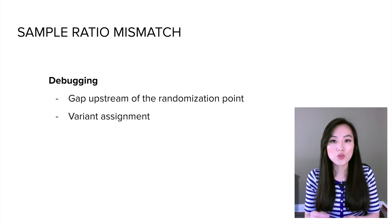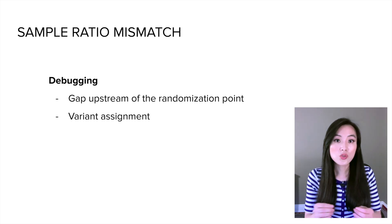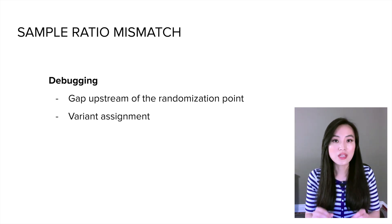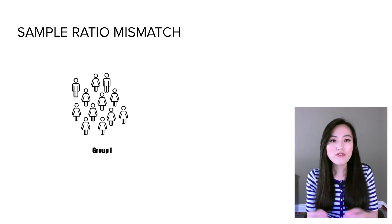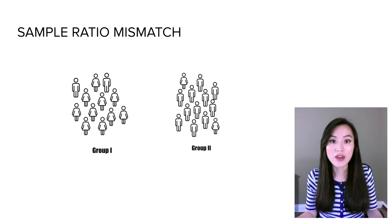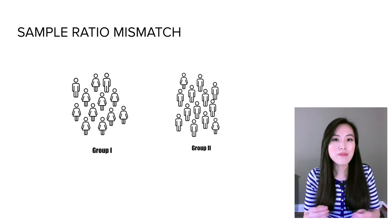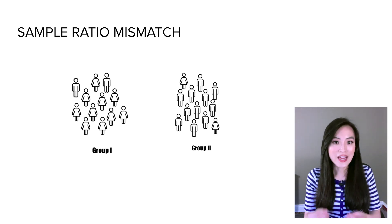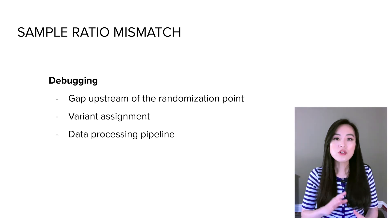Another thing to check is whether the variant assignment is done correctly — are users allocated to different variants properly? If we use user ID to assign users, is the assignment truly random? Will any bias be introduced in this step? For example, if we find one group consists mainly of females and the other mainly of males, then the assignment is unbalanced and neither group represents the overall population, so the result is likely to be inaccurate.